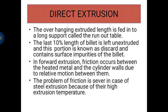The problem of friction is severe in case of steel extrusion because of their high extrusion temperature. In summary, in direct or forward extrusion, the metal flows through the die opening in hot condition by the pressure of a ram or plunger contained inside a cylinder. As it flows through the die opening, it takes the shape of the die opening, and the extruded length is supported by means of a run-out table.